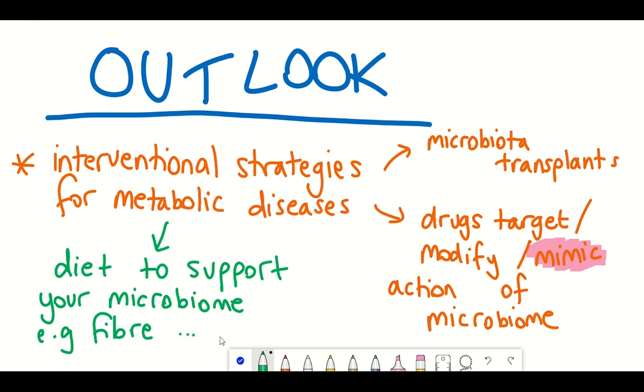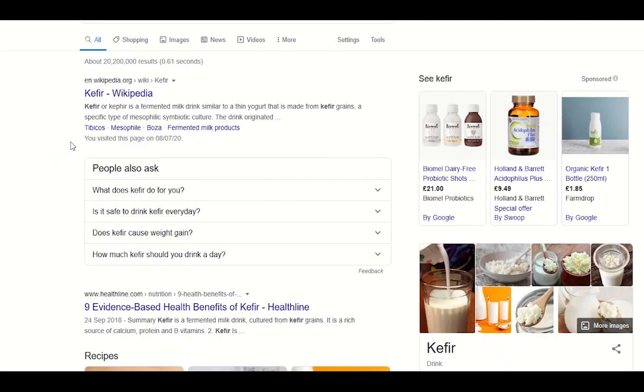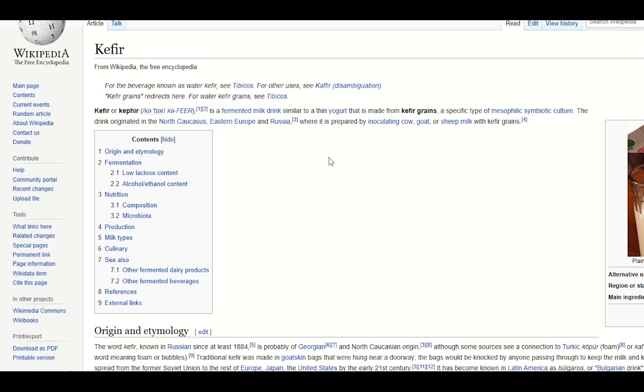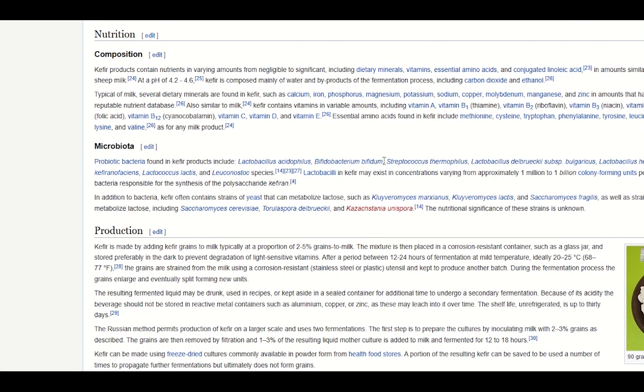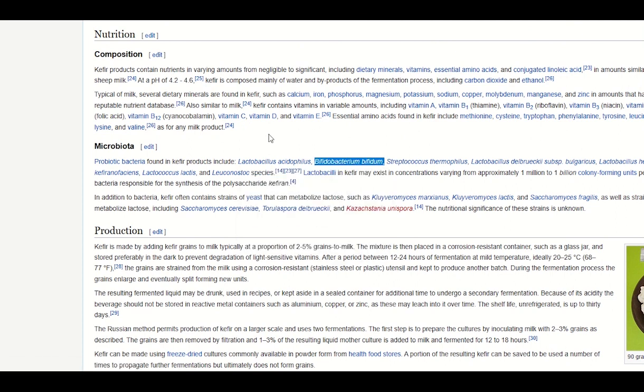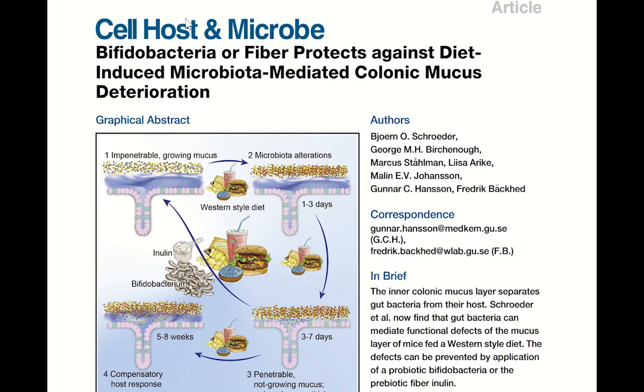For example, I've seen a recent craze about the consumption of kefir, which is a fermented milk product that contains probiotic bacteria. Obviously the content of the bacteria will vary depending on the source of the kefir you have. But some of them contain bifida bacterium, which is the bacteria that I mentioned in the study that promoted the mucus layer, which prevented the thinning of the layer.